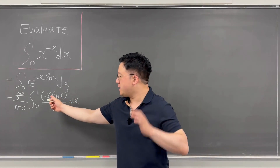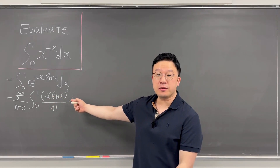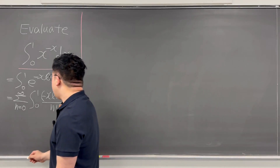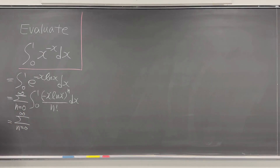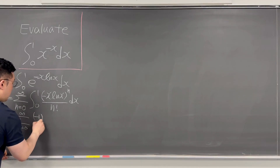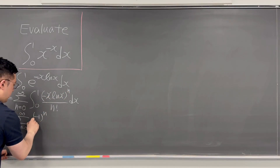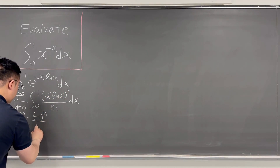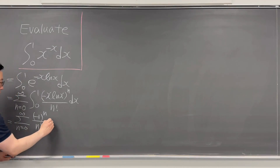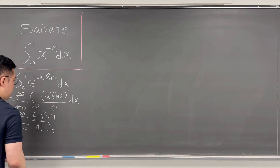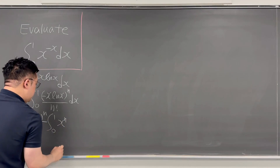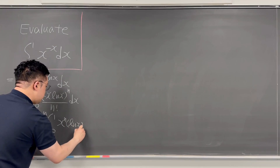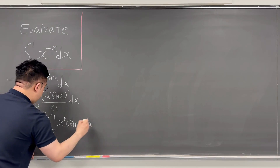We can pull the negative one to the power of n — the alternating sign — outside. So it is the same as the summation from n equals zero to infinity of negative one to the power of n over n factorial, times the integral from zero to one of x to the power of n times ln x to the power of n, dx.